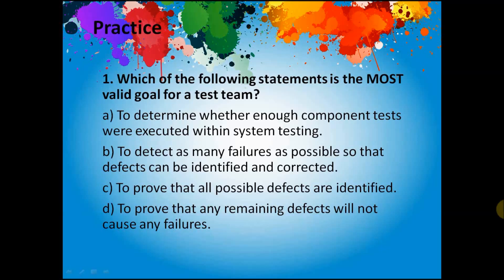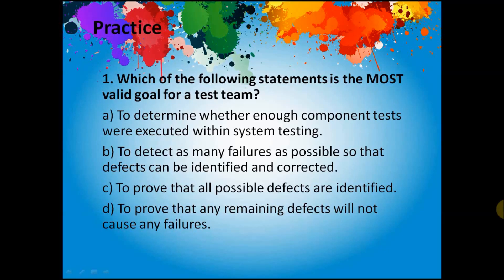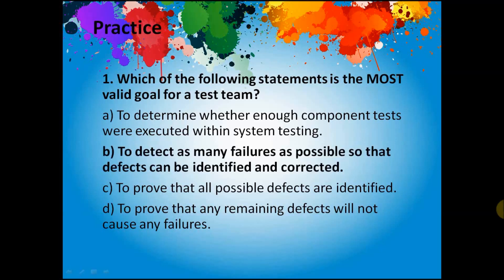Option C: to prove that all possible defects are identified — we cannot prove that all possible defects are identified; this is one of the principles of testing. Option D: to prove that any remaining defects will not cause any failures — testing cannot prove this, so it's not true. The correct answer is B: to detect as many failures as possible so that defects can be identified and corrected.